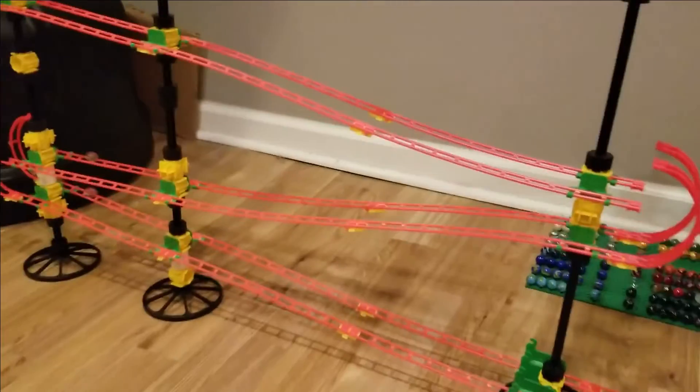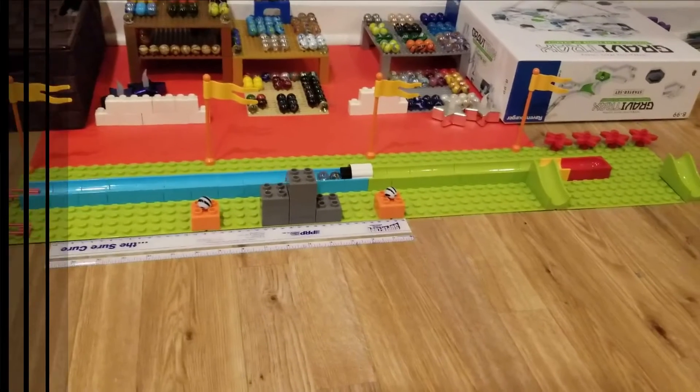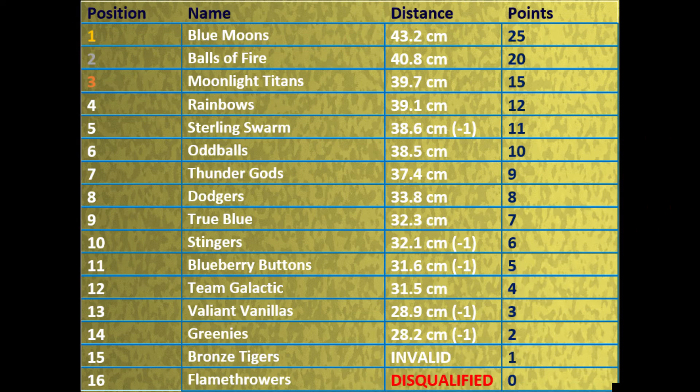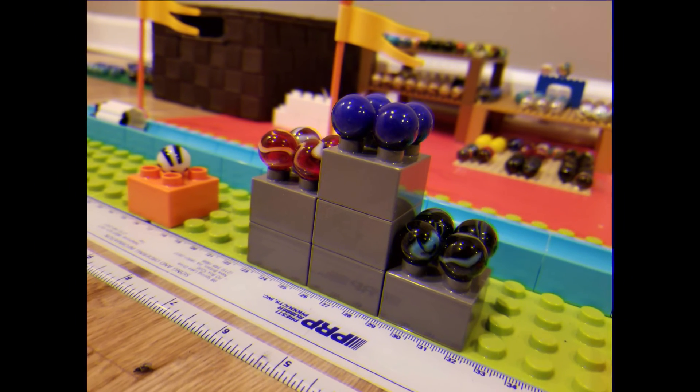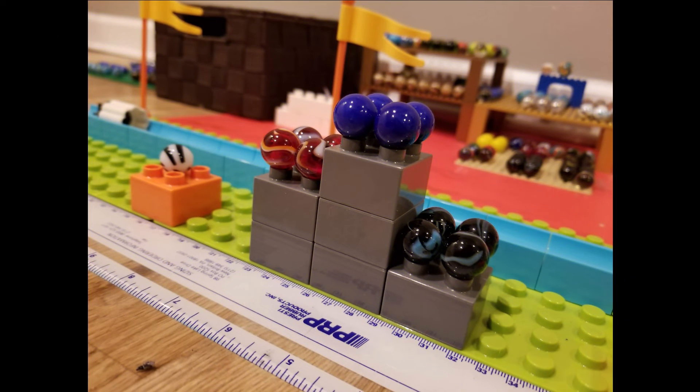Had they saved the best for the last, possibly? Let's see what our hosts can do! All four of them are still on! They spread out, and it's not going to work! It is not going to work! The Blue Moons win gold! Balls of Fire pick up their fourth podium of the season! Moonlight Titans will get their second! The Flamethrowers disqualified, Bronze Tigers down there! I think happy to somehow get a point out of this, despite having an invalid run!